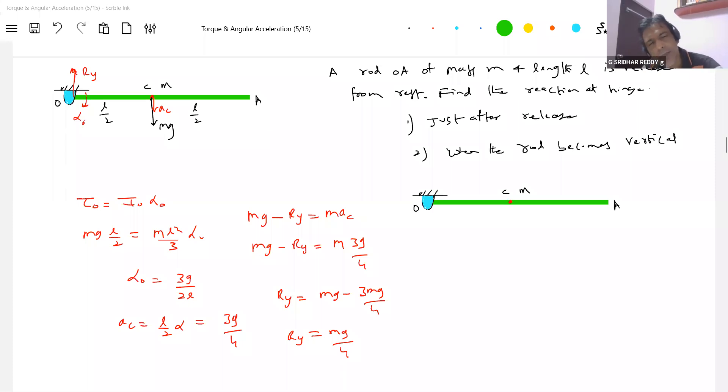After some time, yes, the rod will start swinging. It will come to this position. Then the weight mg does work. The weight mg starts doing work here. When it becomes vertical, what conditions will arise? So finally, let me put it here only.